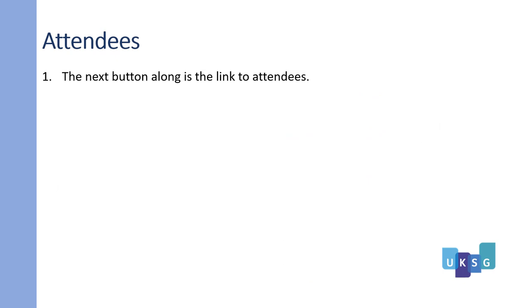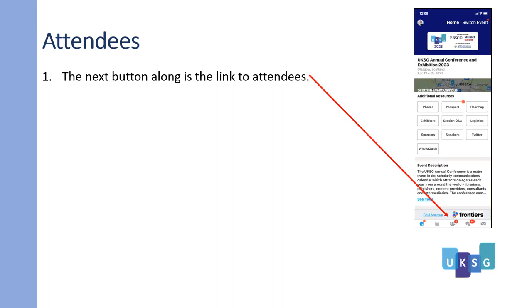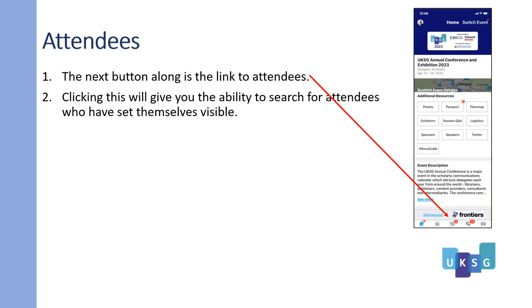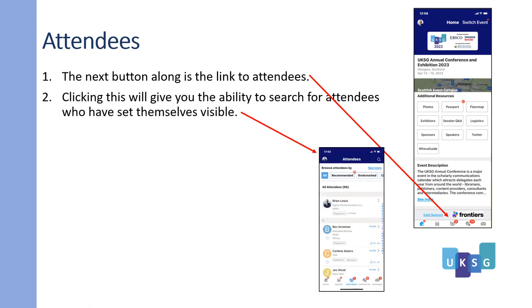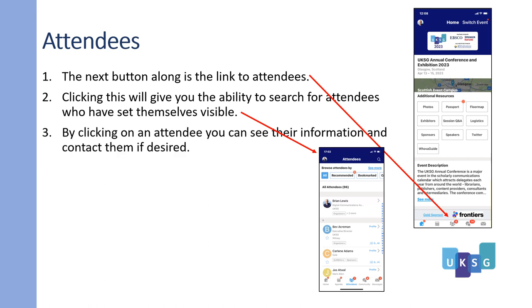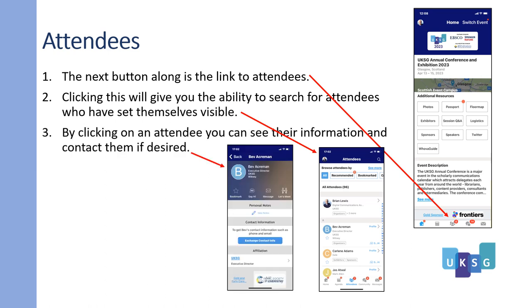Attendees. The next button along on the home page is the link to attendees. Clicking this will give you the ability to search for attendees who have set themselves visible. By clicking on an attendee you can see their information and contact them if desired.